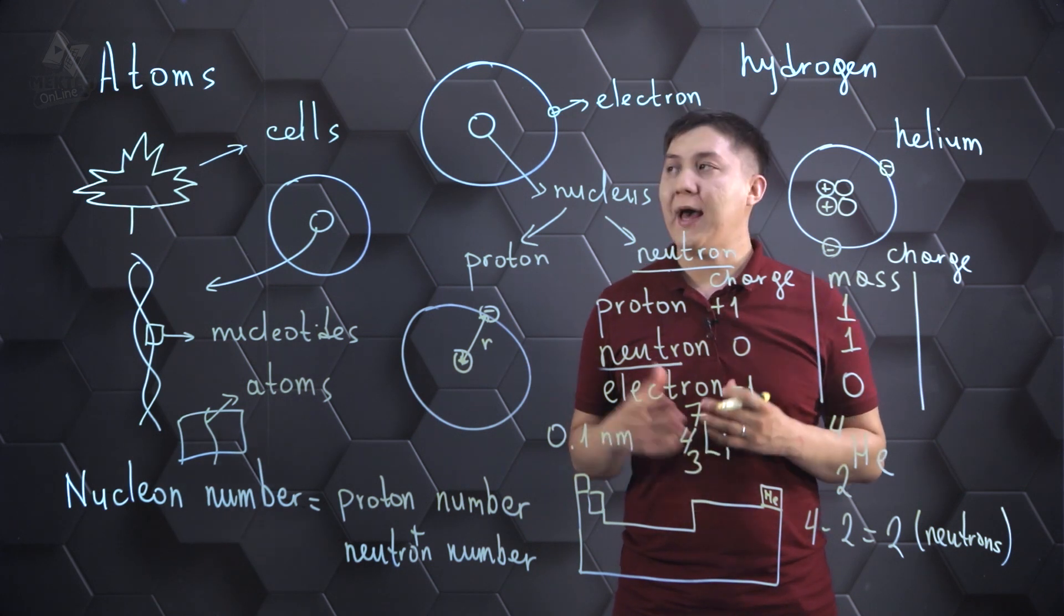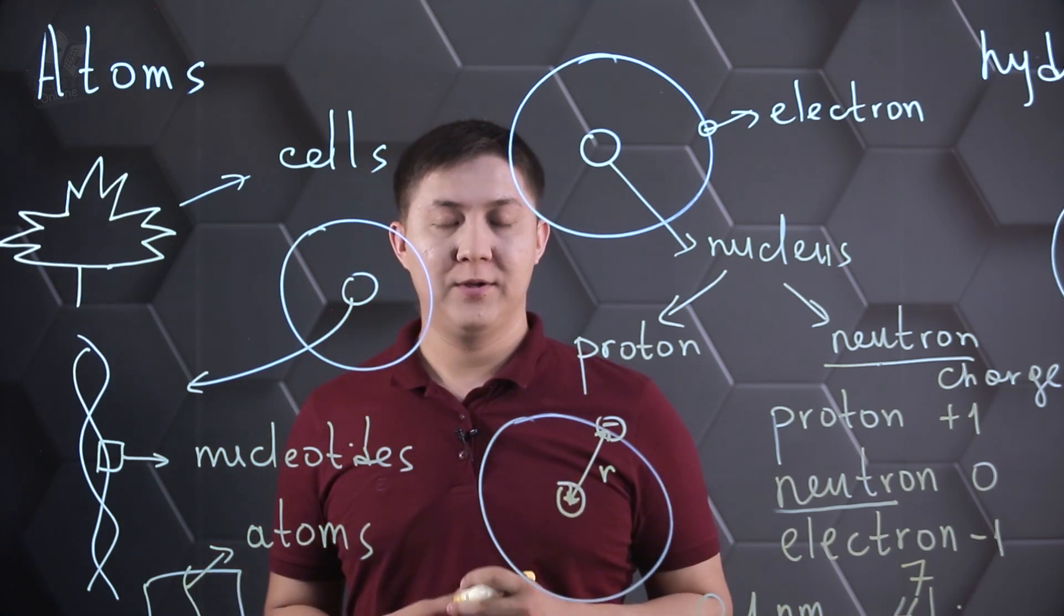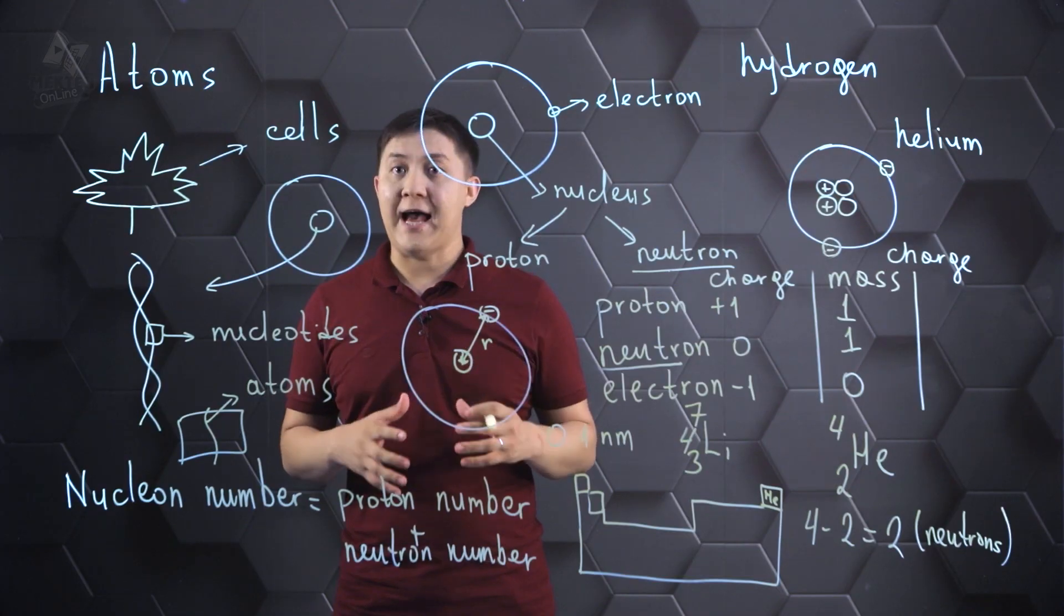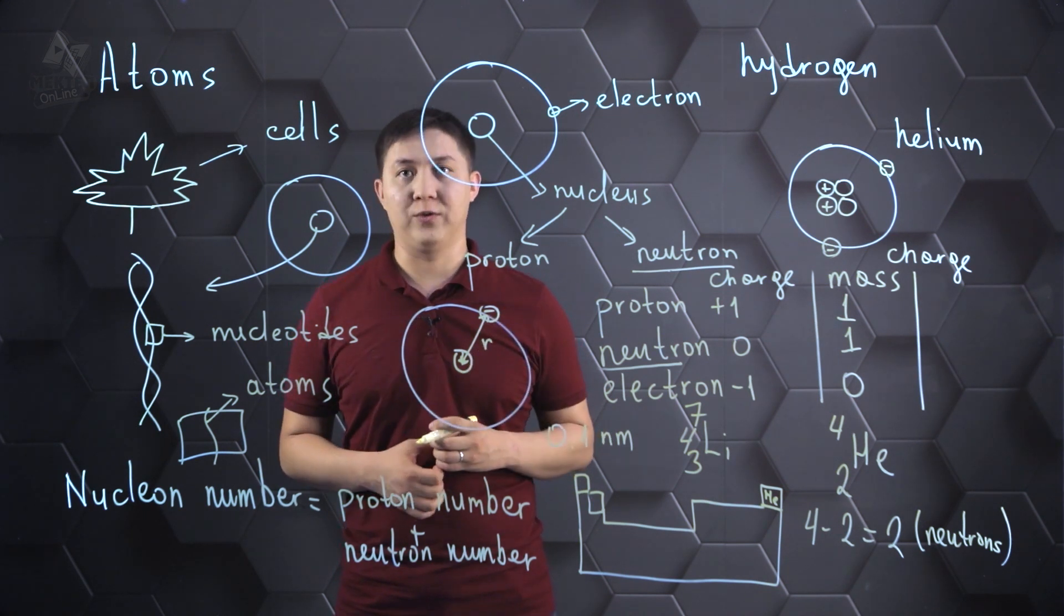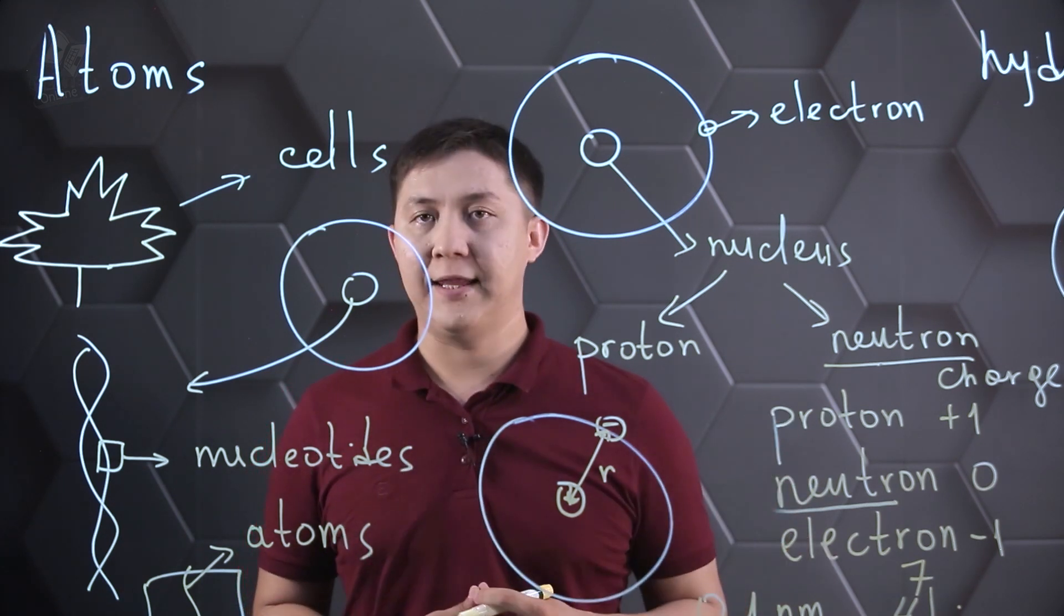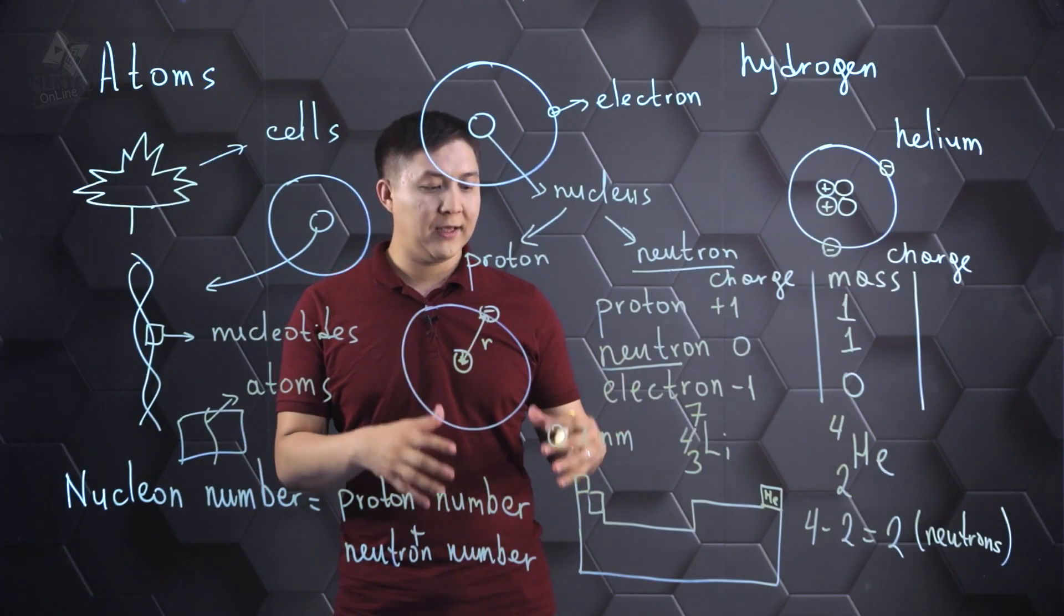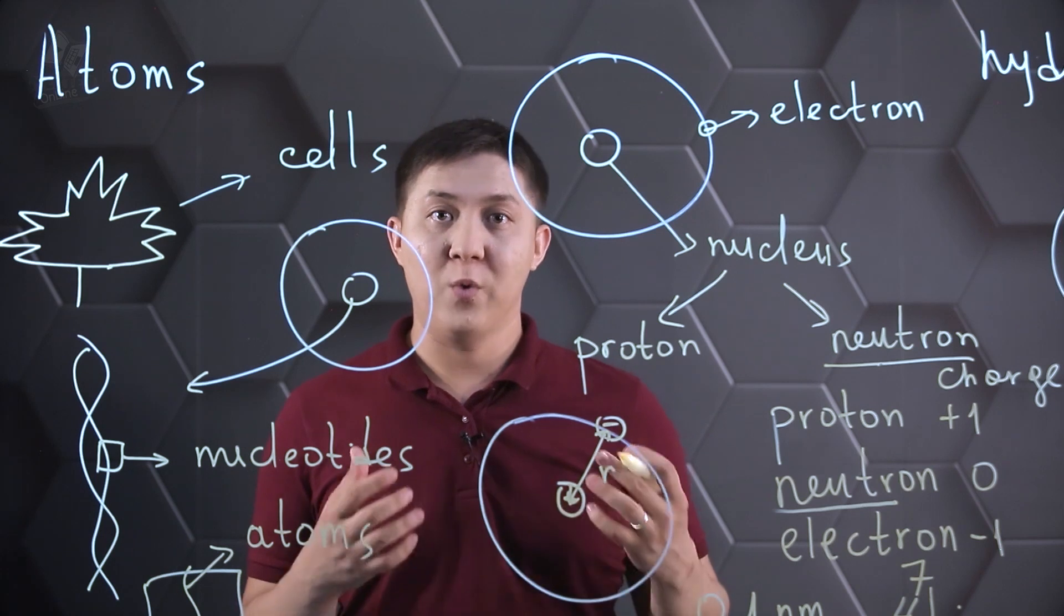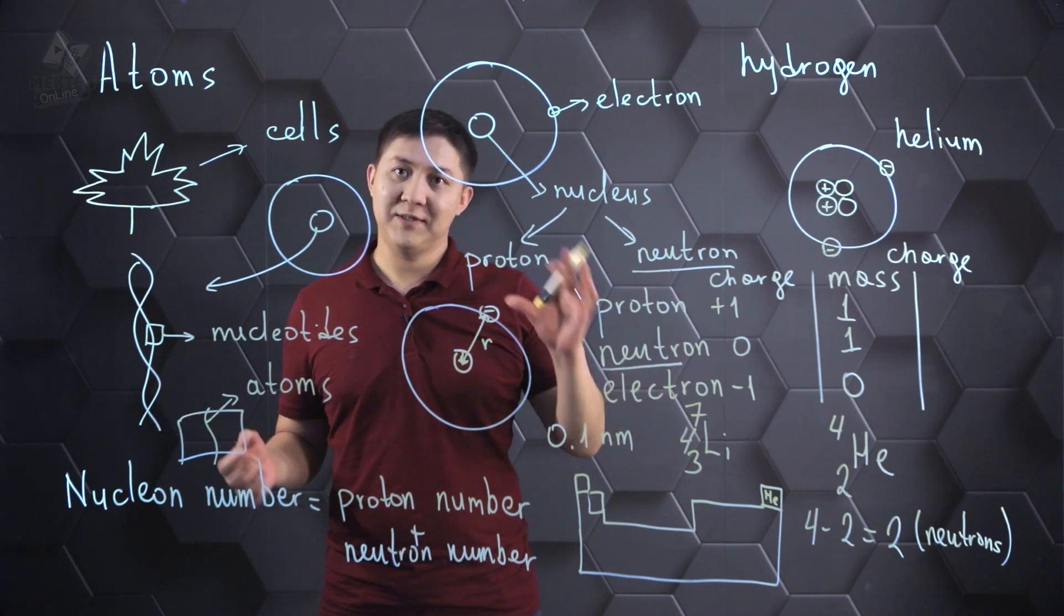So, today we've talked about atom. Atom is a tiny particle which is a building block for all matter. It has two main parts, such as nucleus and electron. We've also talked about relative charges and masses of these subatomic particles. And finally, we now know that there are different types of atoms which we call elements. But, we are going to study elements in the next videos. That's it for today. See you next time.